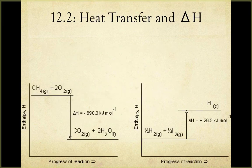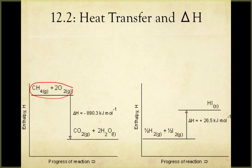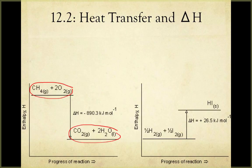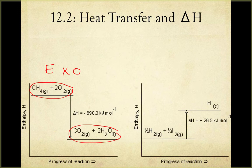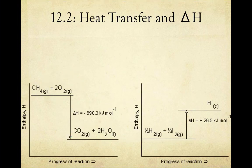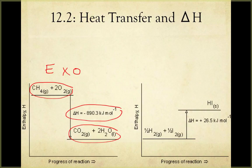Let's look at these enthalpy diagrams, starting with the one on the left. Notice here that our reactants have a relatively high enthalpy value, and our products have a relatively low enthalpy value. This means that as we move from reactants to products, energy was released, making this an exothermic reaction. Notice also that if we take our enthalpy change — our final enthalpy minus our initial enthalpy — we get a negative value, so a negative delta H.